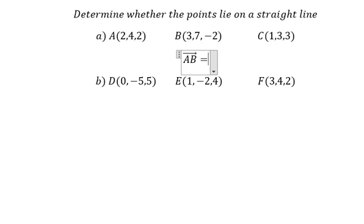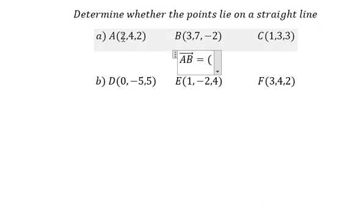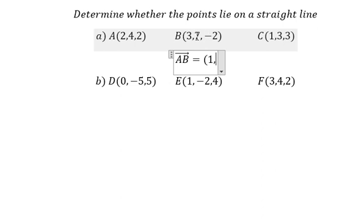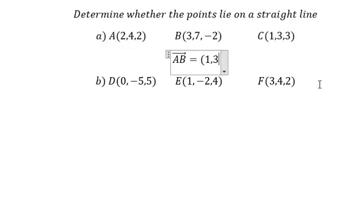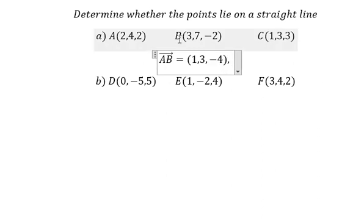So we have 3 minus 2, we get 1. Then 7 minus 4, we get 3. Then negative 2 minus 2, we get negative 4. Then we need to find vector BC.